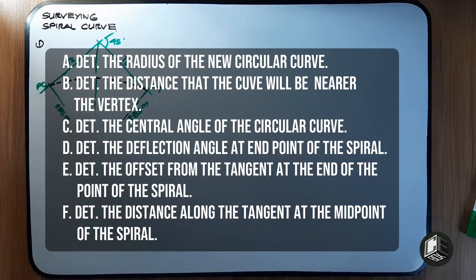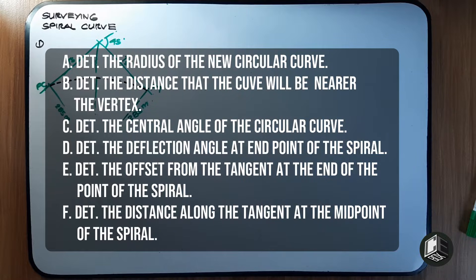Letter C: determine the central angle of the circular curve. Letter D: determine the deflection angle at the end point of the spiral. Letter E: determine the offset from the tangent at the end point of the spiral. Letter F: determine the distance along the tangent at the midpoint of the spiral.